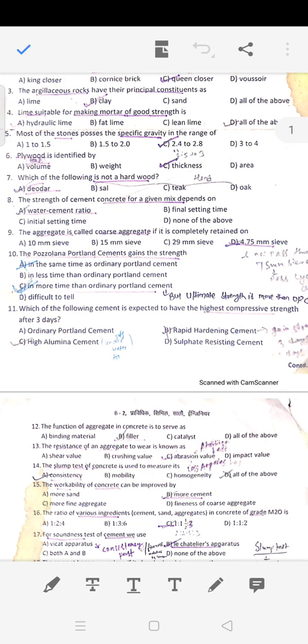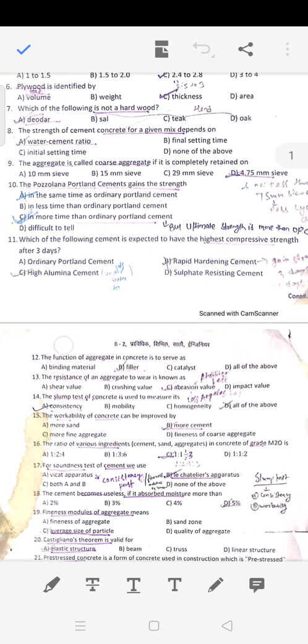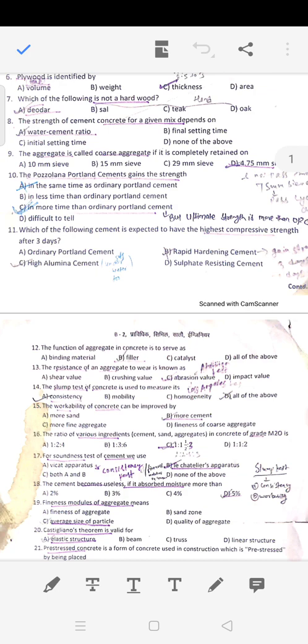Teak wood is hardwood. The strength of cement concrete for a given mix depends on water cement ratio.